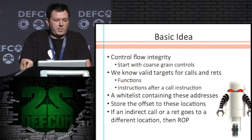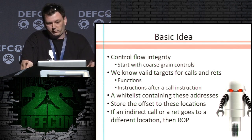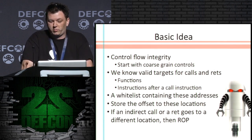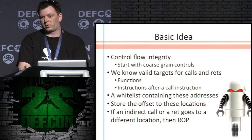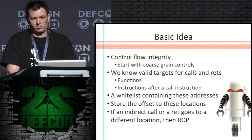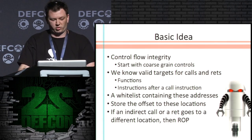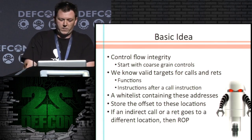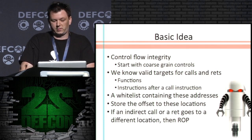The basic idea is we're going to enforce some control flow integrity, starting with just coarse-grain controls. The idea is we know where your calls and returns are supposed to go — the functions, instructions after call instructions, things like that. So we want to create a whitelist of these addresses.